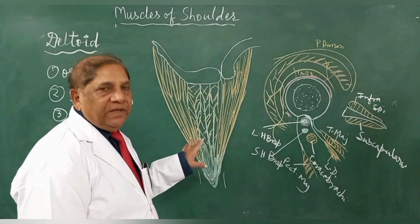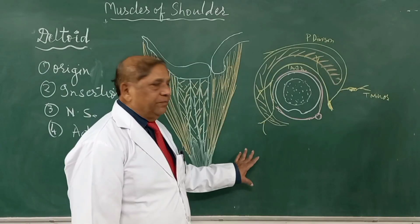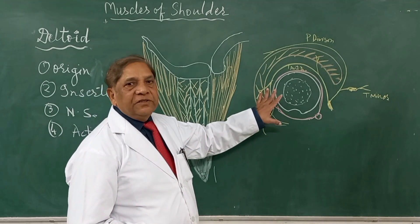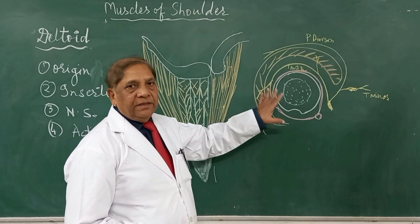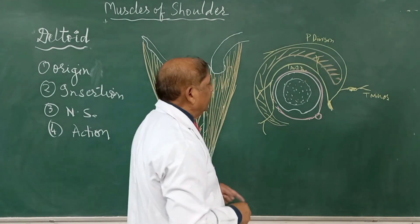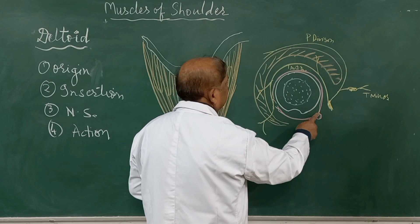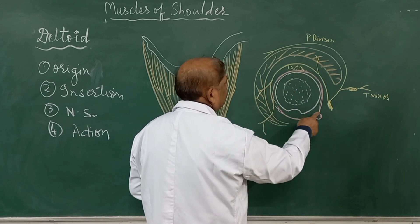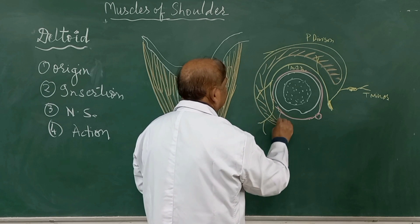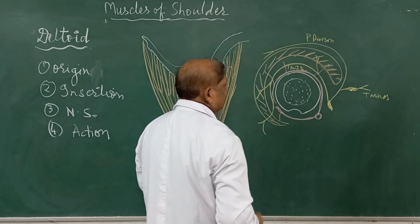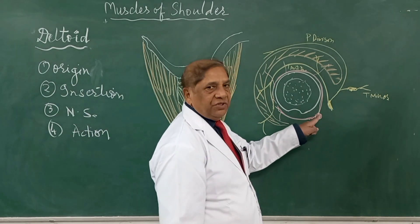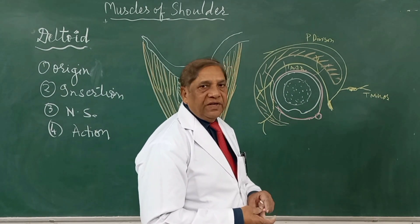This completes the deltoid muscle. Welcome back students. In continuation of the deltoid origin, insertion, nerve supply, and action, this diagram will show you the relationship of the artery and nerve supplying the deltoid. This is the cross-section of the humerus at the surgical neck, and this is the third part of the axillary artery. The third part of the axillary artery gives origin to the posterior circumflex humeral and the anterior circumflex humeral arteries, where they anastomose and send multiple branches to neighboring structures. This is the anastomosis by the anterior and posterior circumflex humeral arteries.